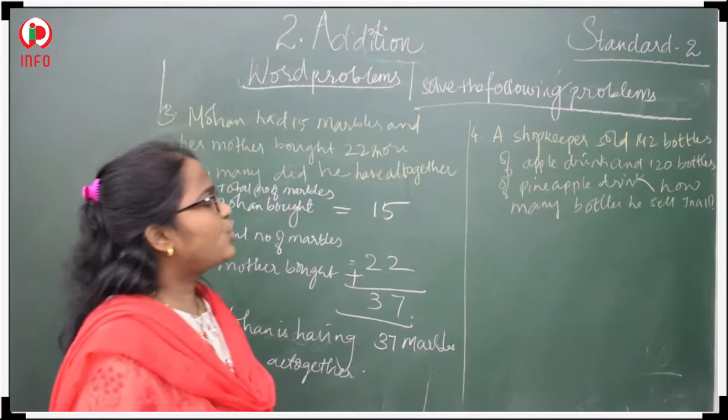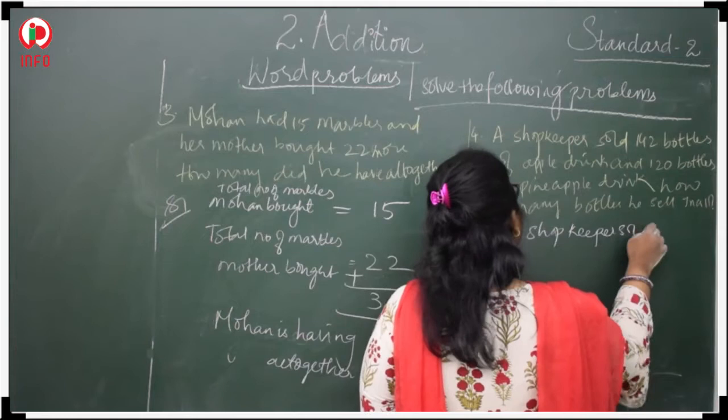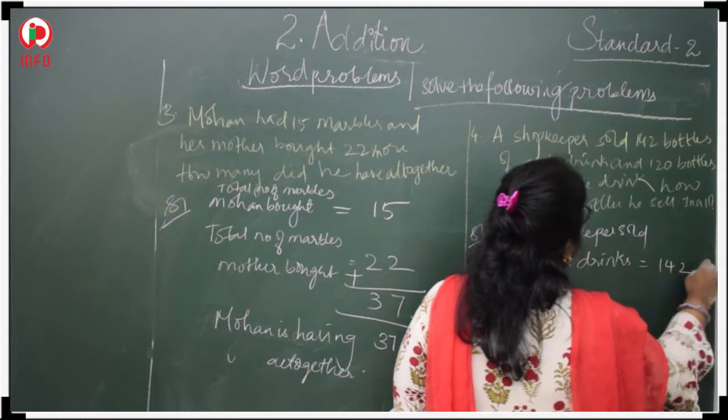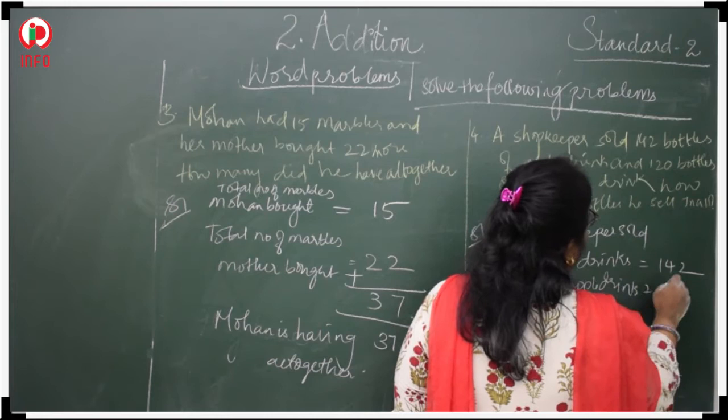A shopkeeper sold 127 bottles of apple rings, 142 pineapple rings.